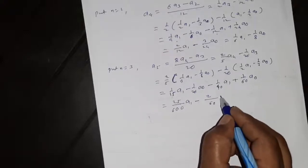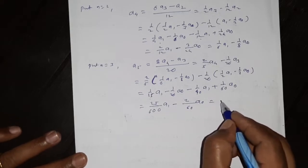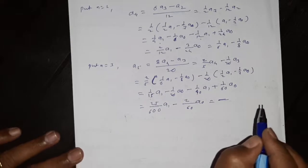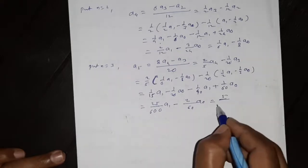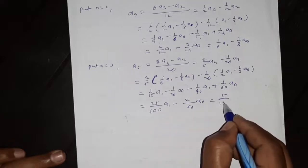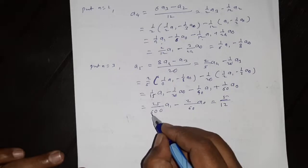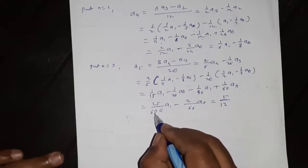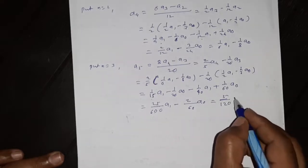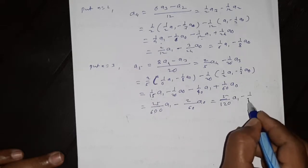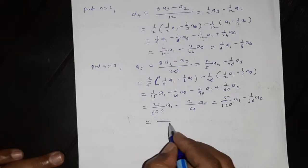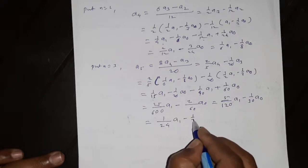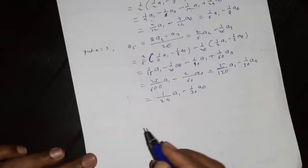Minus 3 plus 1 is minus 2 by 60, e naught. Computing: 5 fives are 25, 5 ones are 5, 5 twos are 10, and 5 fours are 24. So we have this answer: this is a5 and so on.